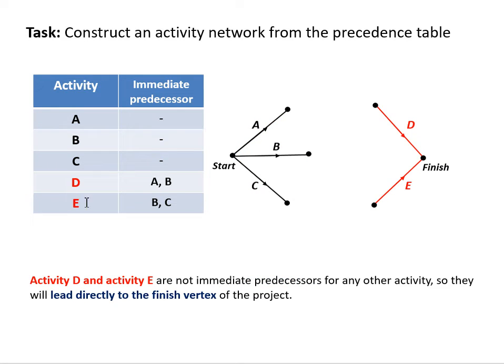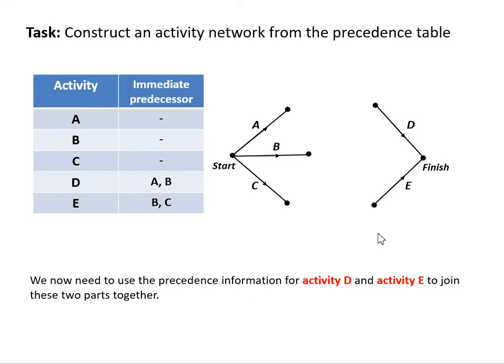At the other end, we can see that activities D and E are not listed anywhere in the immediate predecessors, which means nothing relies upon them to be completed before the next activity can start. So these D and E activities are actually our finishing activities. Now we just have to look and see how we connect these three starting to these two finishing activities, using this precedence table.